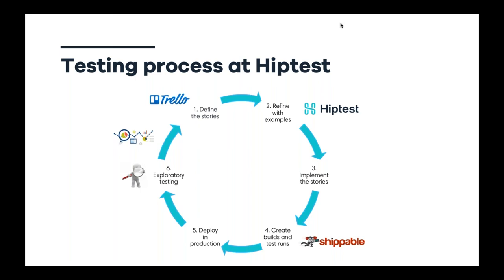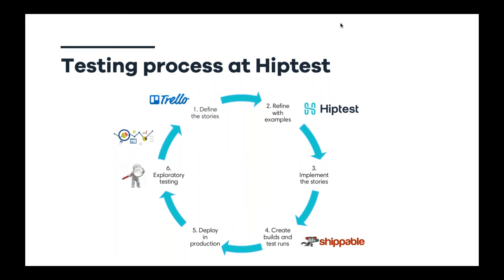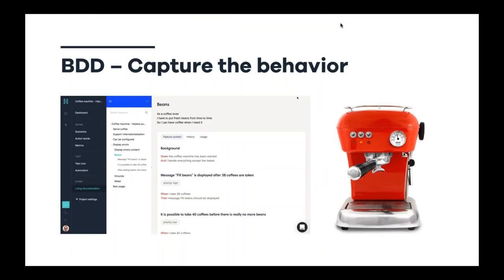We use these BDD scenarios to drive development, as they are all automated. We'll see how the automation process works during the demo. HipTest is integrated with our CI/CD pipeline — we use Shippable for that. All BDD scenarios are executed automatically, and when they all pass, the software is deployed to production. In production we can do exploratory testing and continuously monitor the usage of the feature.